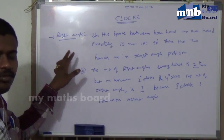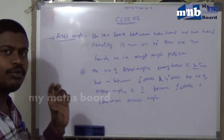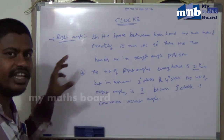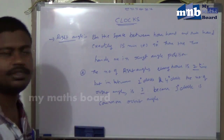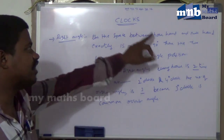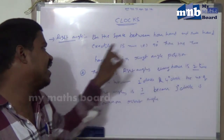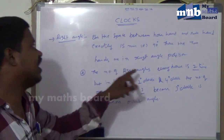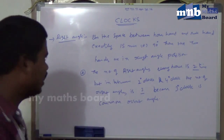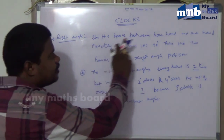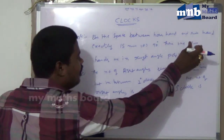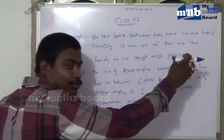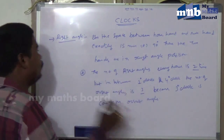We will discuss some other important positions in the clocks chapter. The first one is the right angle position. This is a very important position. When the space between the hour hand and the minute hand is exactly 15 minutes or 90 degrees, the two hands are in the right angle position.